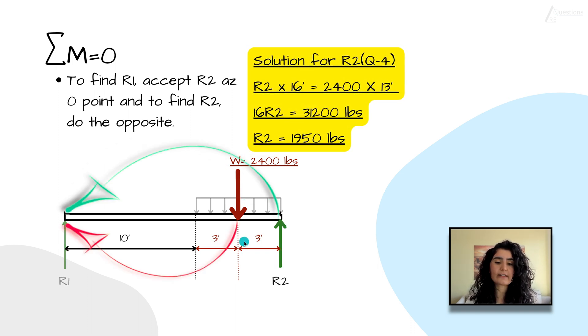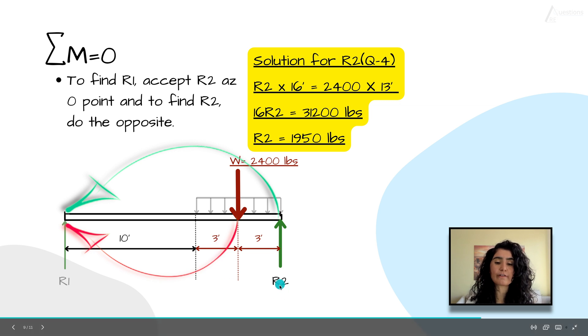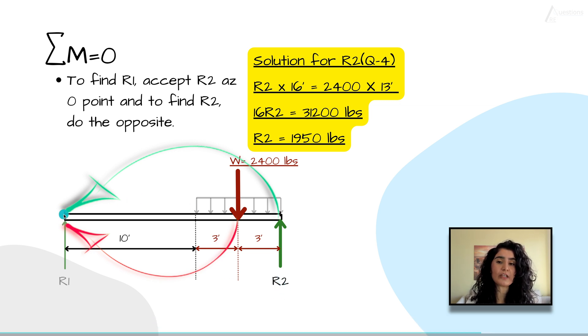If you do the same thing for R2, it's going to be W times 13 feet, because that's how much it is further away from R1. When we are looking for R2, our zero point is accepted to be R1, so we are calculating everything towards R1. We are thinking that R2 and W are competing to rotate this beam to the point of R1. R2 in this equation is going to be R2 times 16 equals 2,400 times 13 feet. If you do the math, R2 is going to be 1,950.